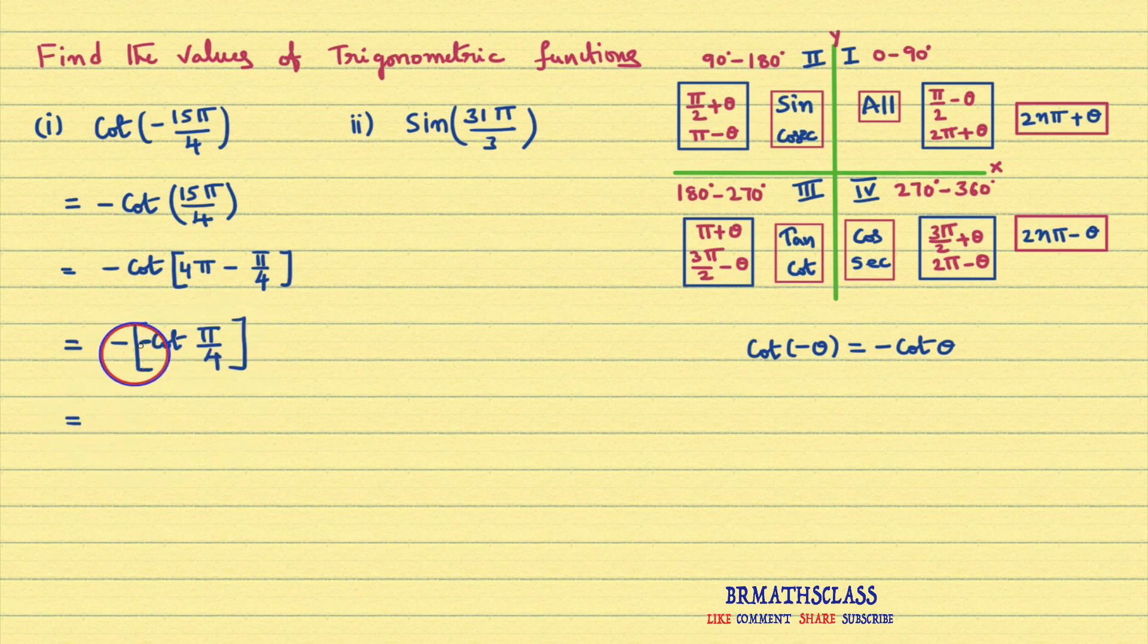Here this minus times minus will become plus. You will get cot π by 4. From the trigonometry table we know that cot π by 4 value is 1. Therefore cot of minus 15π by 4 is 1.